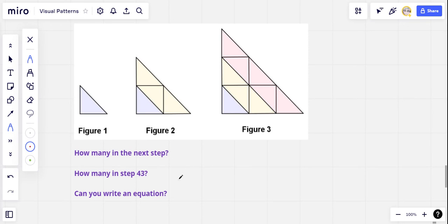Hello everybody and welcome back to another visual pattern challenge. Here's our pattern today. We've got figure 1, figure 2, figure 3, and your challenge is to predict how many triangles are going to be in figure 4.